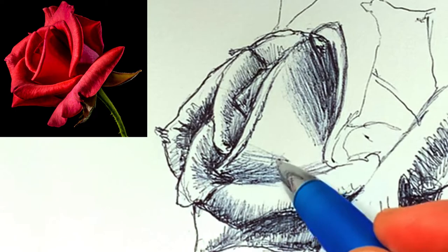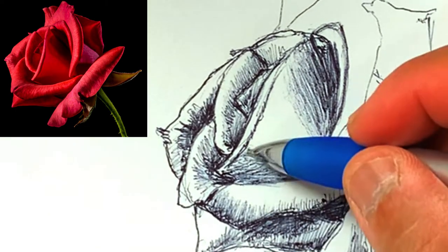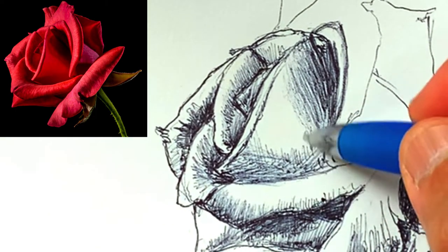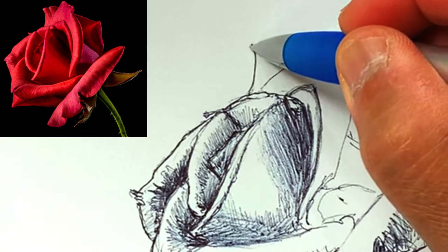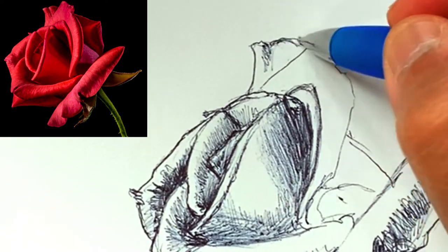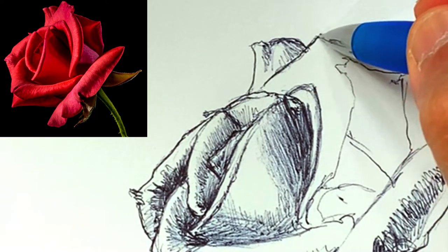I'll usually keep it fairly light for the most part initially, and then I will put a lot more pressure just to get the really dark tones. I tend to put the dark tones in later on once I have everything pretty much shaded in.